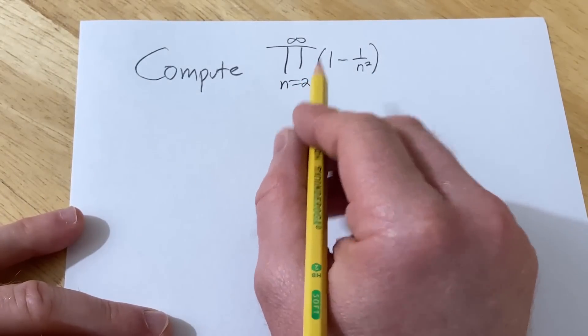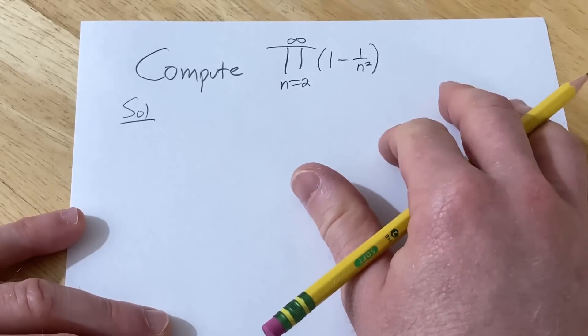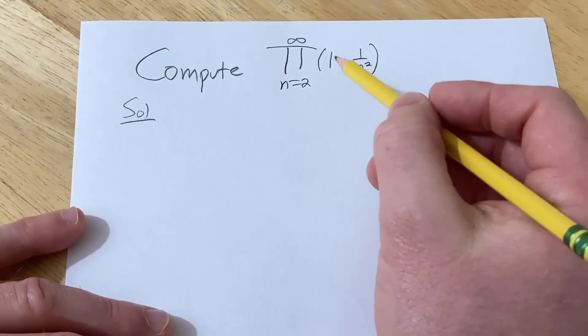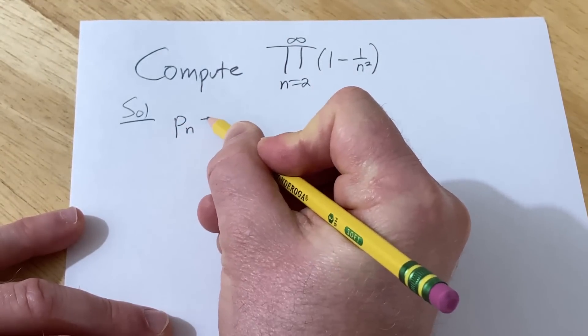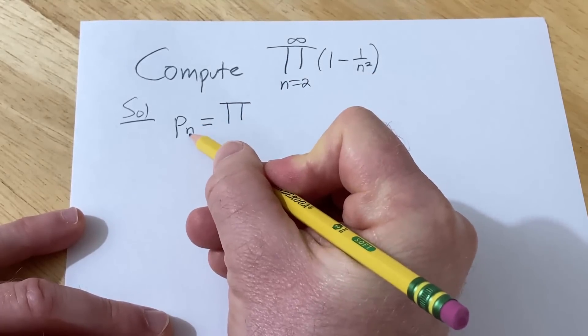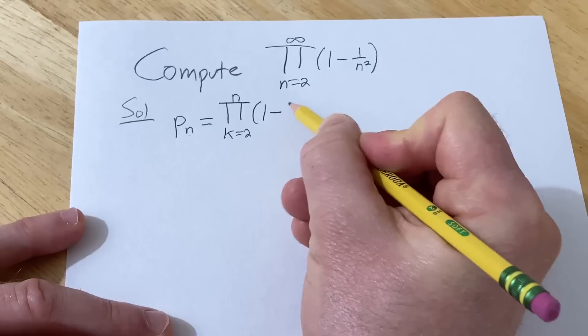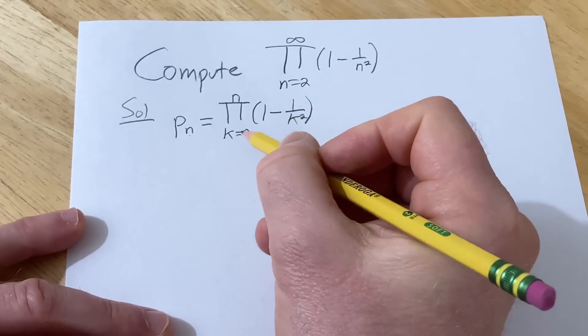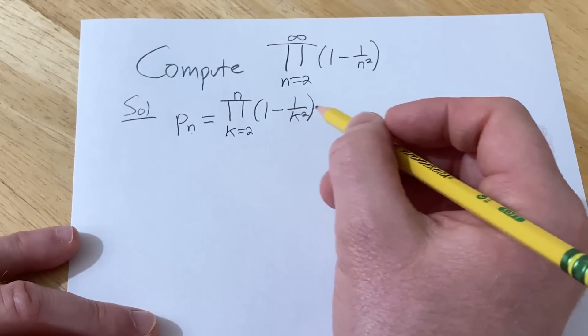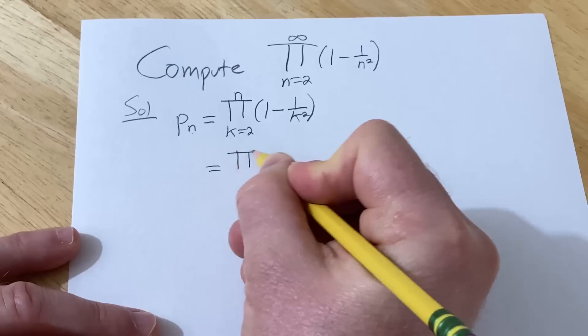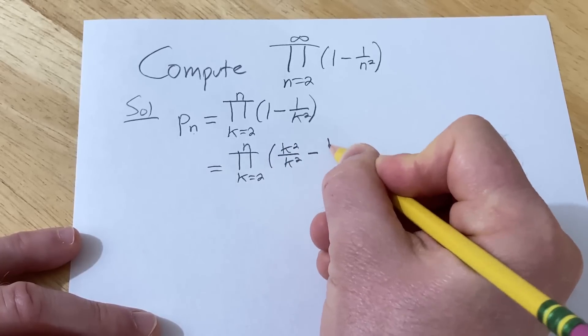Okay let's go ahead and compute the value of this infinite product. So solution. We'll start by looking at the nth partial product and we'll simplify it and then we'll take the limit. Again this is a very simple example. These problems can get very hard and also in many cases you can't even compute the value. You're mostly concerned with whether or not the product converges or diverges. So the nth partial product p_n is equal to π. So I've already used n here so I have to use a different variable here. So I'm going to use k and we're going to go from 2 to n and this is parentheses 1 minus 1 over k².